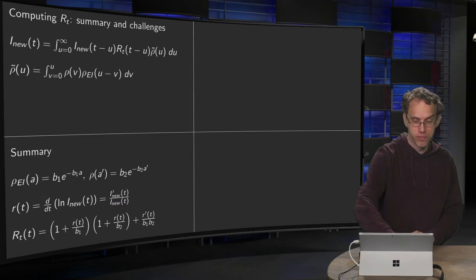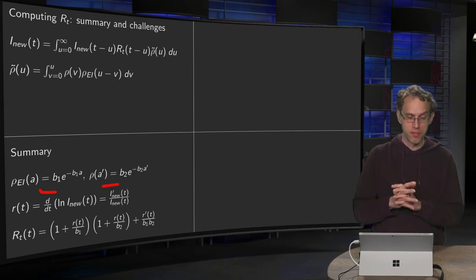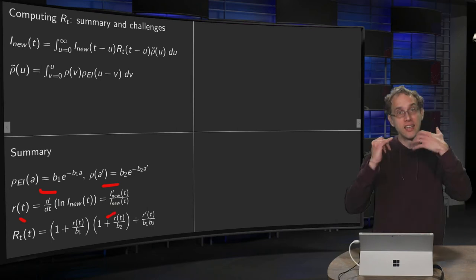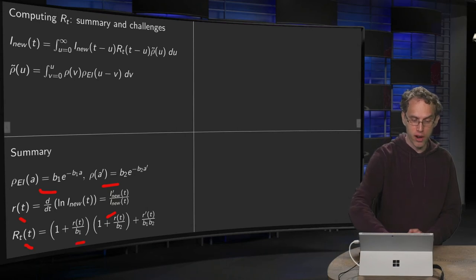So how do we solve this problem? In summary, we assumed two probability densities, rho_EI and rho, that's step one. Step two, we defined small r(t), the logarithmic derivative of I_new, and in the end we could find an expression for our reproduction number R_t in terms of the small r and b1 and b2,